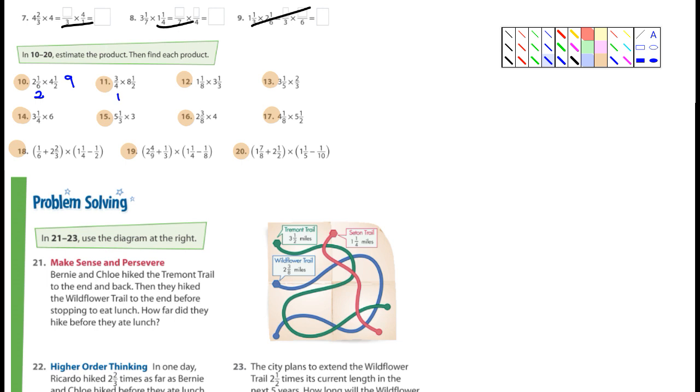3 quarters is pretty close to 1. 8 and 1 half, we'll just leave it as 8 and 1 half. What's 1 times 8 and 1 half? 8 and 1 half. There's your estimation for number 11. Now, number 12, 1 and 1 eighth is pretty close to 1. 3 and 1 third is close to 3. What's the estimation? 3. 5 and 1 quarter, that's really close to 3. 2 thirds, that's probably closer to 1. It is closer to 1. What's 3 times 1? 3. There's your estimation.